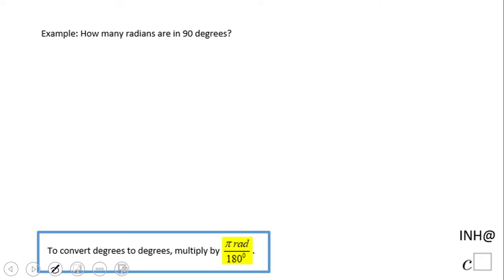Welcome or welcome back to I Need Help at C Squared. In this example, we're going to take a look at how we change degrees to radians. So what do we have here? We have an angle that is 90 degrees and we want to find out how many radians we have.